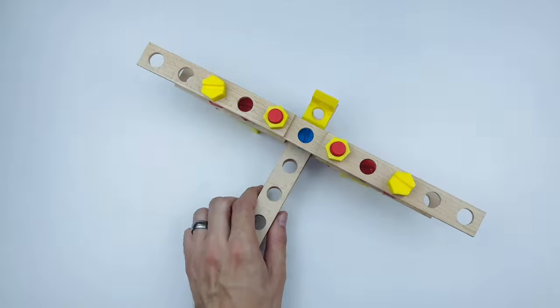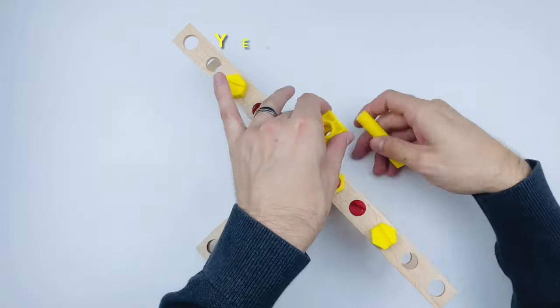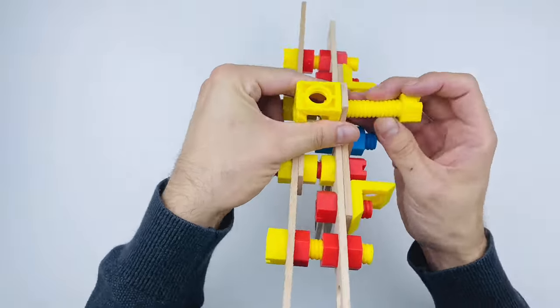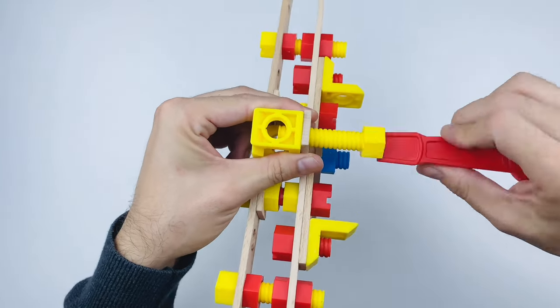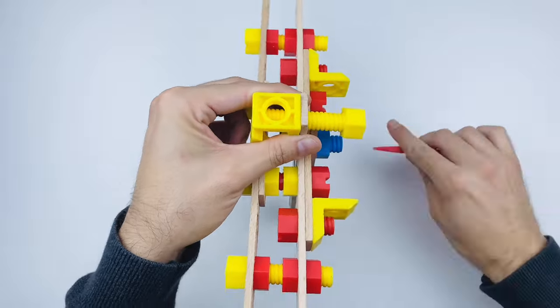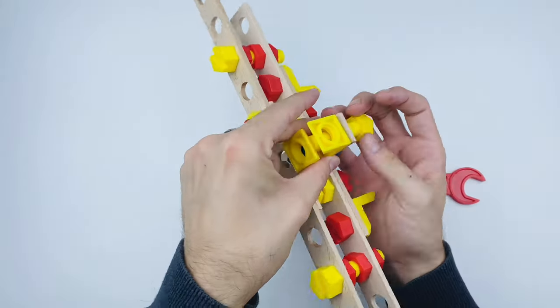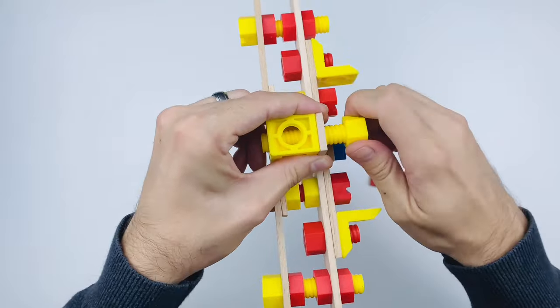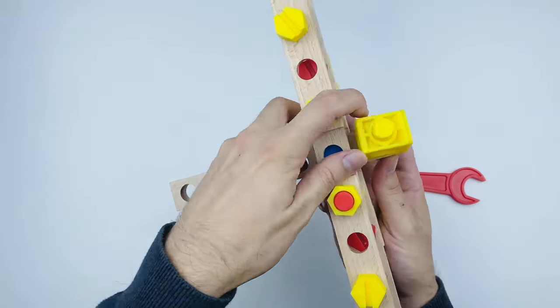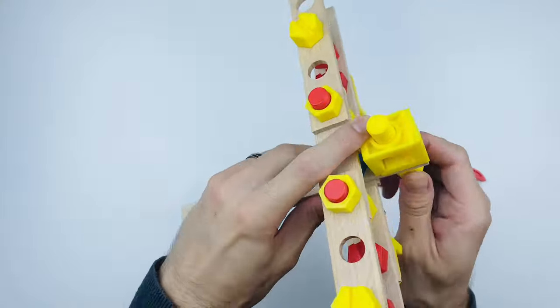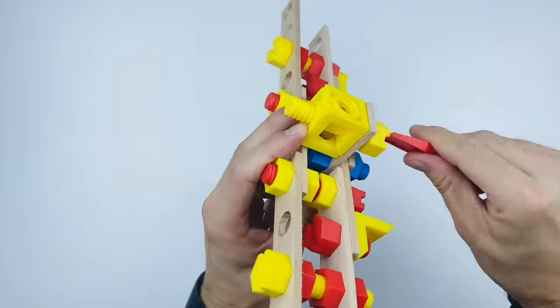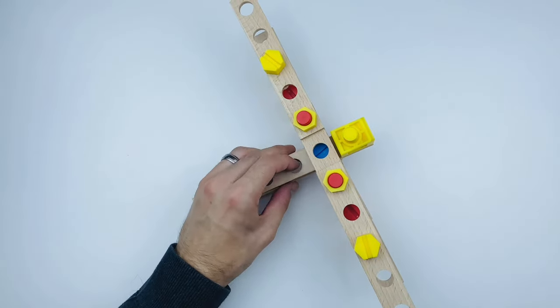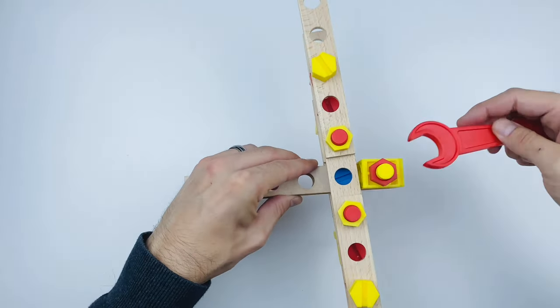Let's start making the propeller. We'll need two yellow brackets and a yellow bolt. Let's use the red wrench this time. We'll fasten it using the screwdriver tip of the red wrench. Which do you like more? Blue or red?